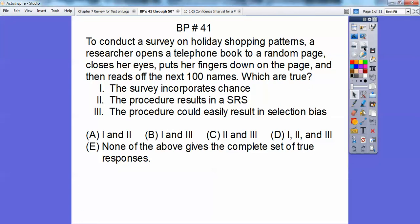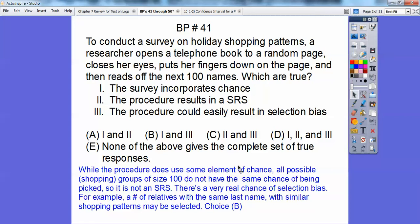It's not an SRS because they're in alphabetical order. So if they opened up a page, they can pick a last name that there's a lot of last names that are the same and probably some family members. So all possible shopping groups of size 100 don't have the same chance of being selected. So it does provide some chance and there's definitely a real chance of selection bias. So I'm going to say choice B on this one. Selection bias is definitely not an SRS because of all the names in alphabetical order.